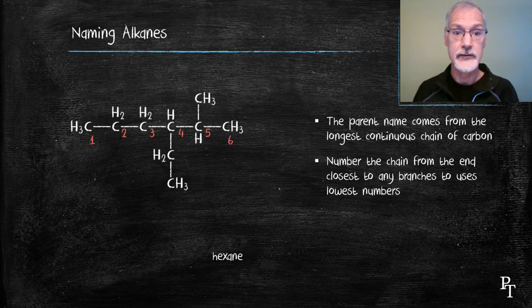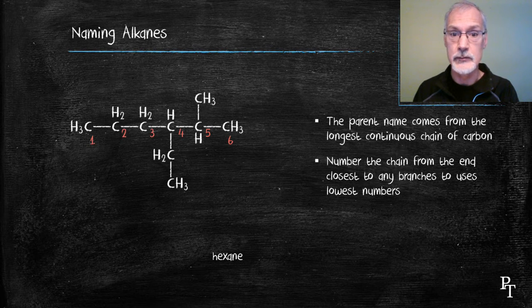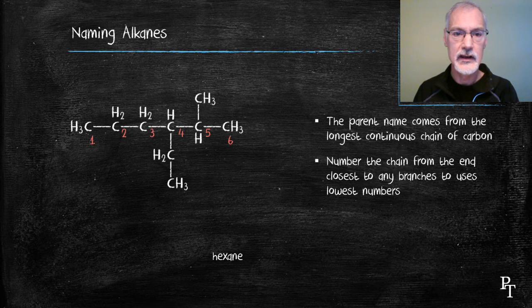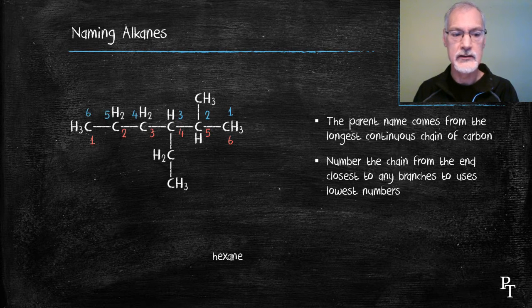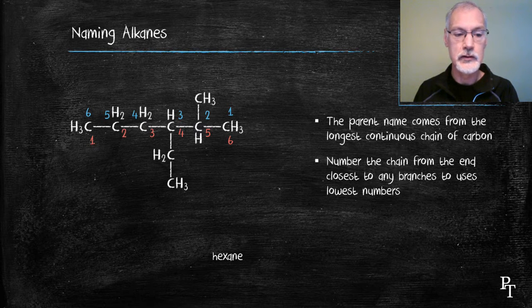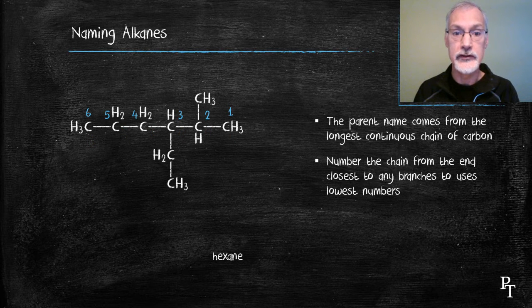I then number my carbons from the end closest to the branches. So I have an option here of the red numbers or from right to left. I can see here that my side branches are located using the blue numbers at two and three. That's a lower combination than four and five with the red. So I'm going to use the blue numbers for numbering.